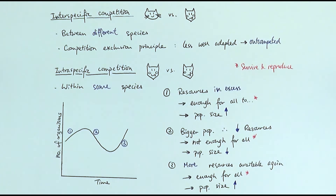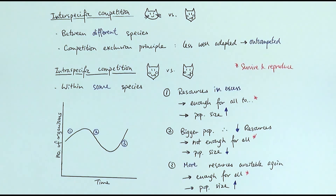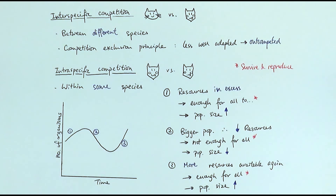In summary: competition is split into interspecific competition, which is between different species competing for the same thing, where the less well adapted species will be out-competed until elimination or extinction via the competition exclusion principle. Intraspecific competition is within the same species — individuals compete within their own group — and the population size typically fluctuates following this pattern based on the amount of resources available in the environment.